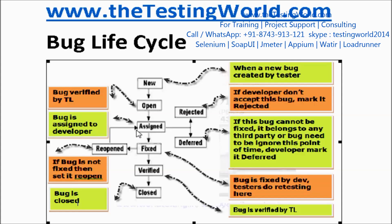Second condition: the developer checks the bug and is able to replicate it, so the developer accepts the bug. But for any reason the developer is not able to fix it right now. The developer will set it to 'Deferred', meaning the developer will fix that bug later on, and will provide a comment explaining why it's not being fixed now.